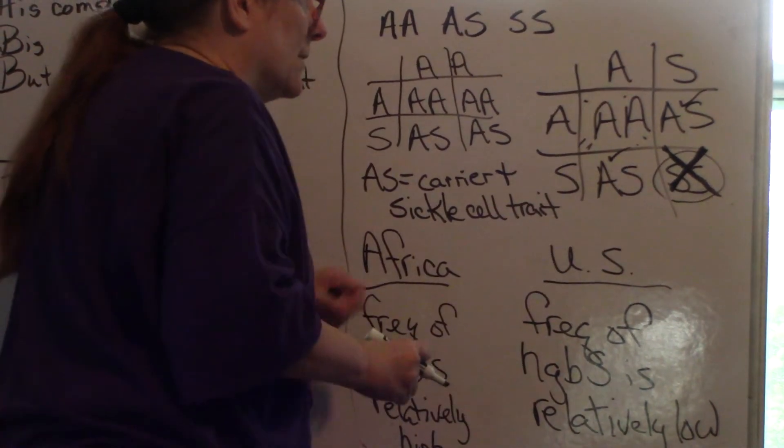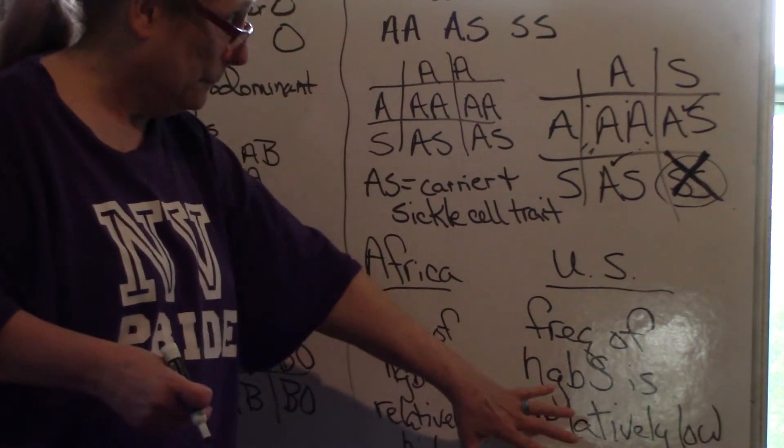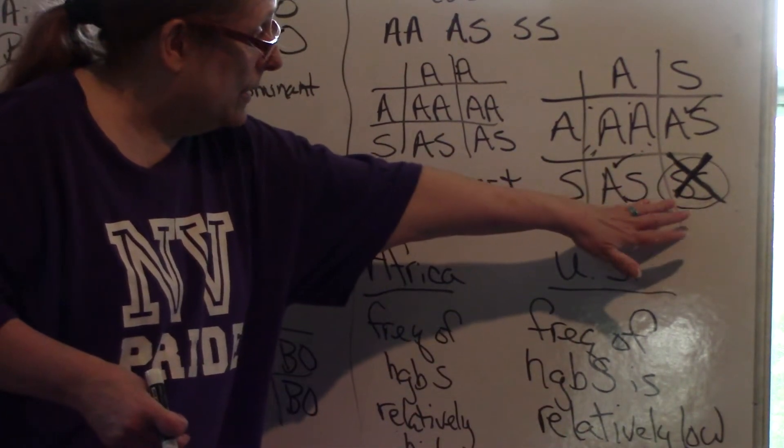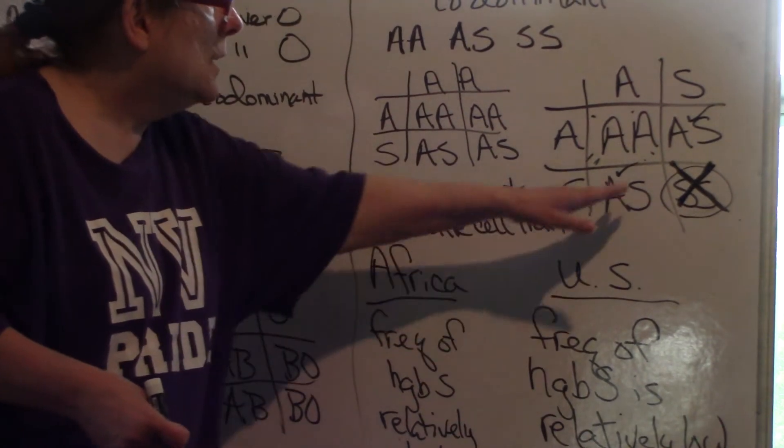So the big A is not selected against in the homozygous dominant. So for the homozygous recessive, there's no advantage to being heterozygous.